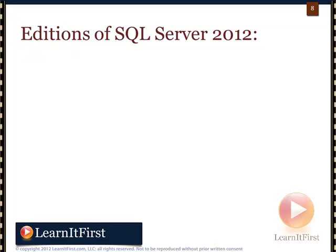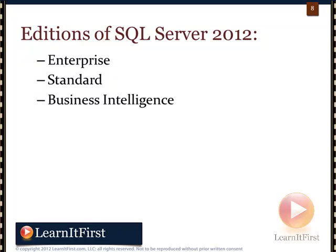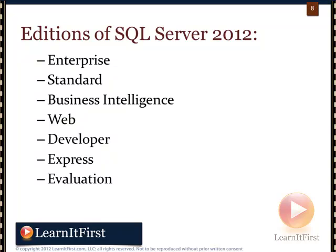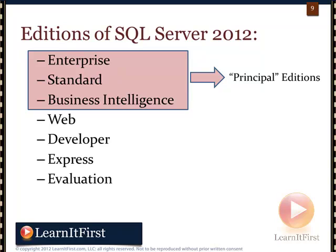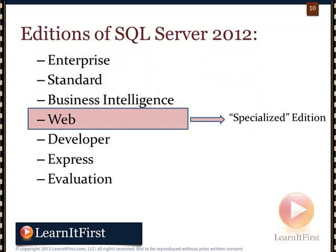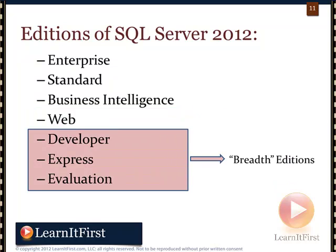The editions are: Enterprise, Standard, BI Edition - which is new in 2012 - Web, Developer, Express, and Evaluation. SQL Server Compact is technically still an edition but won't be covered here. Enterprise, Standard, and Business Intelligence are the ones you're most likely to encounter in a production environment - Microsoft calls these the principal editions, and they cost the most. The Web edition is a special edition for web hosts. Developer, Express, and Evaluation are what Microsoft calls the breadth editions, trying to get the product in as many hands as possible.